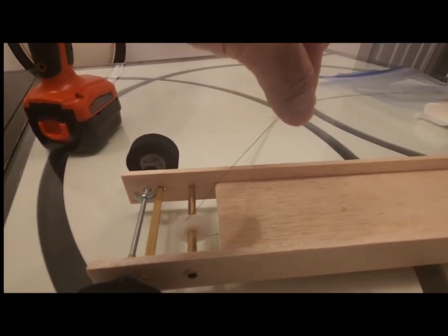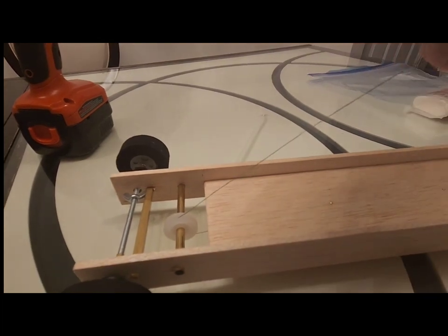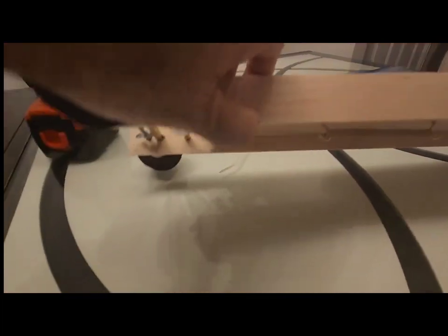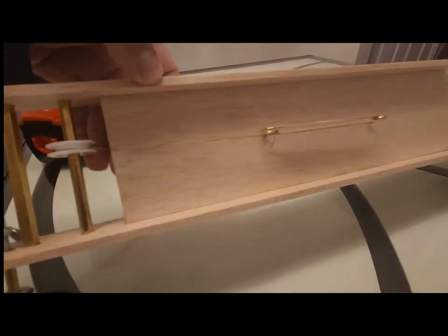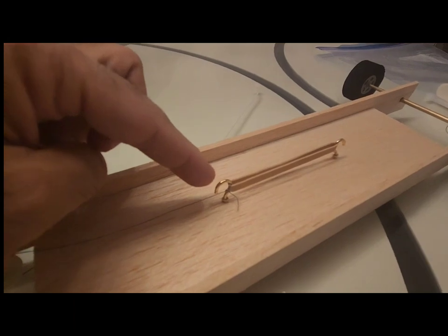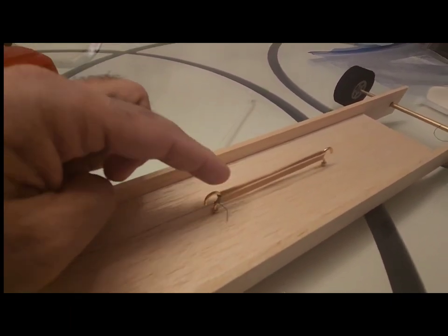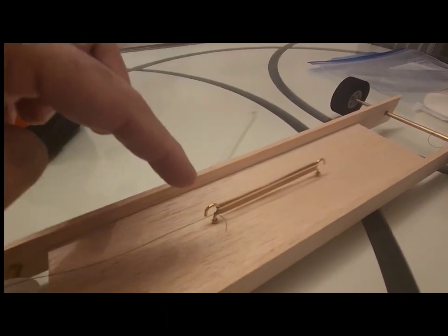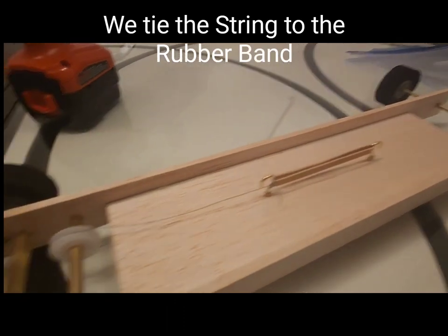There's also a string, this is a pretty strong synthetic string. On the lower side of the vehicle we have to attach eye hooks - these are called eye hooks. They also provide a rubber band and that's how you have the rubber band here.